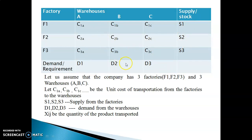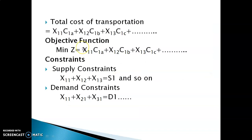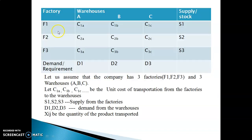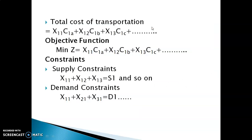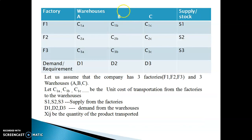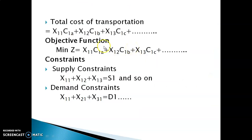Now how can we formulate the LPP for this problem? If we are supplying X11 units to warehouse A, X12 units to warehouse B, and X13 units to warehouse C, then the total cost will be X11·C1A plus X12·C1B plus X13·C1C, plus X21, X22, X23 for factory F2, and so on. We add all the costs of transporting each item to each warehouse to get the total transportation cost. Our objective function is: minimize Z equal to the total transportation cost.